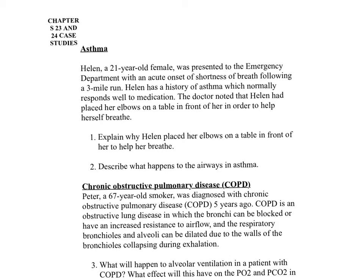Helen, a 21-year-old female, went to the ED with an acute onset of shortness of breath following a three-mile run. She has a history of asthma which normally responds well to medication. The doctor noted that Helen had placed her elbows on a table in front of her in order to help herself breathe.